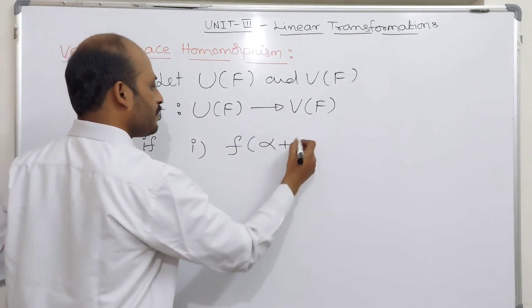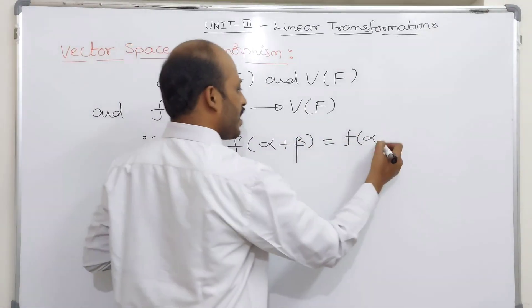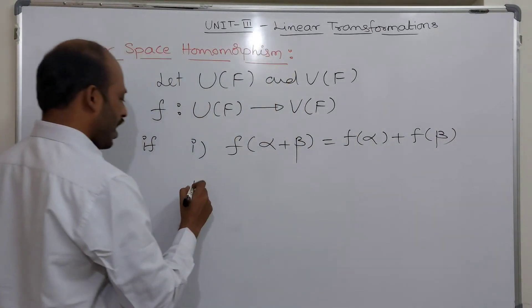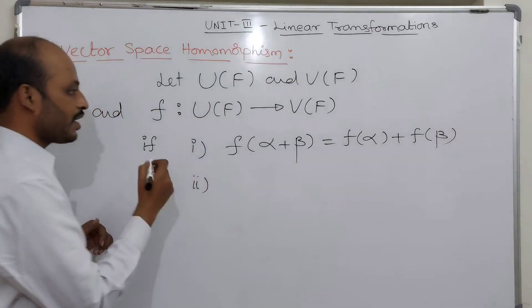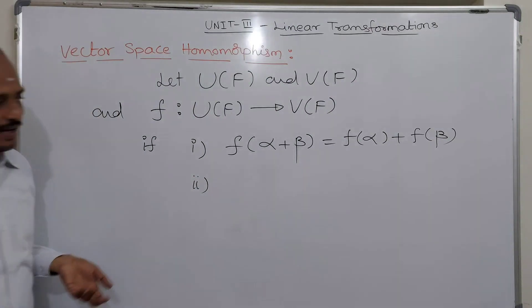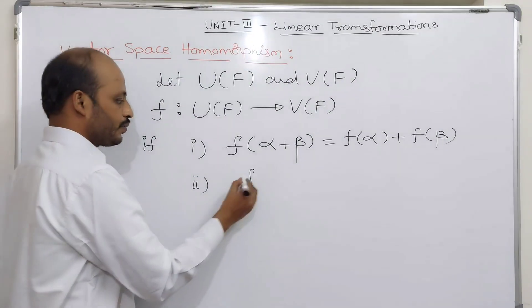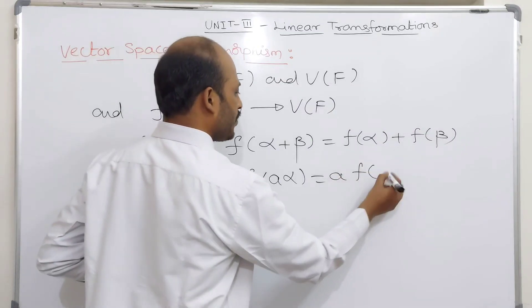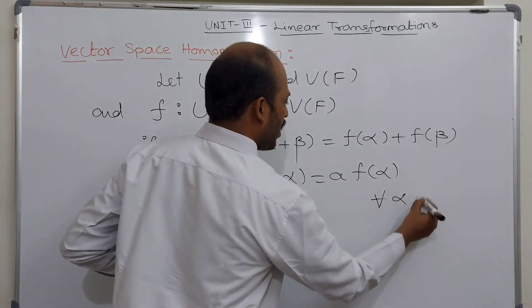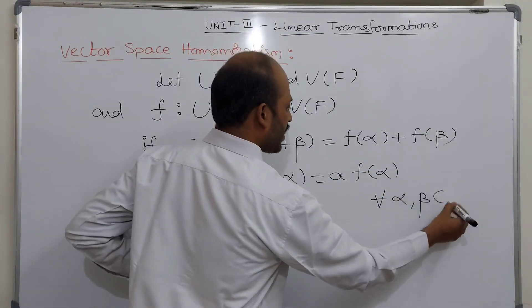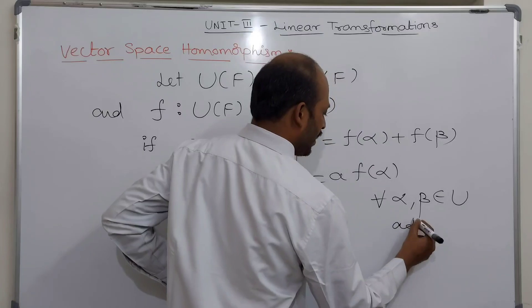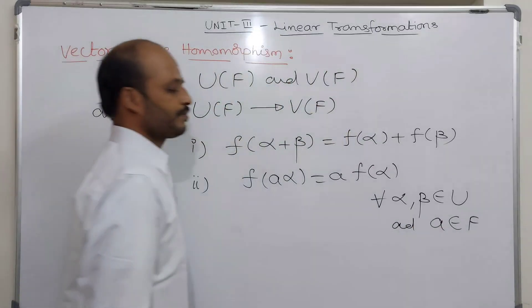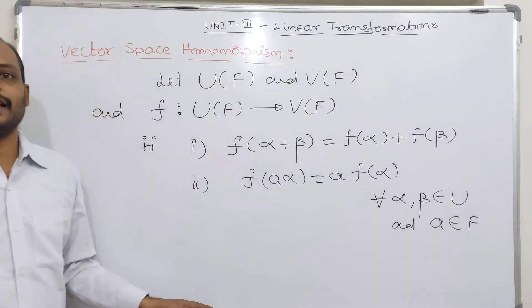The first condition: F(α + β) = F(α) + F(β). The second condition: F(aα) = a·F(α). For all α, β belonging to U and a belonging to the field F.